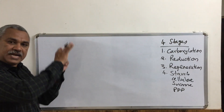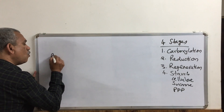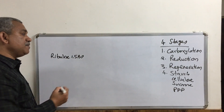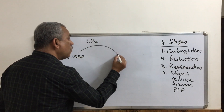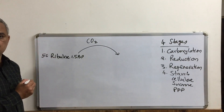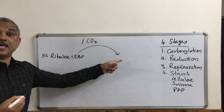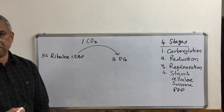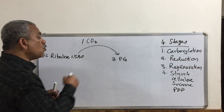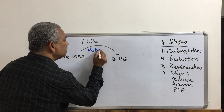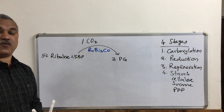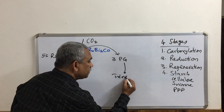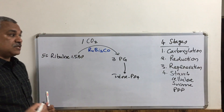Diagrammatically, the cycle begins with ribulose 1,5-bisphosphate. A carbon dioxide is attached to this five-carbon molecule, so one carbon is added, making it an unstable six-carbon intermediate that splits into two three-carbon compounds — that is, two molecules of 3-phosphoglycerate are formed. This reaction is catalyzed by the enzyme Rubisco.